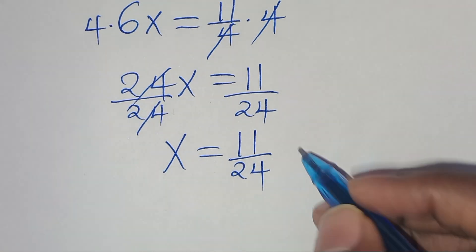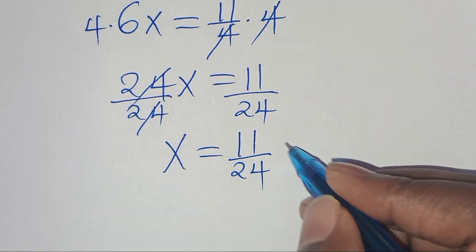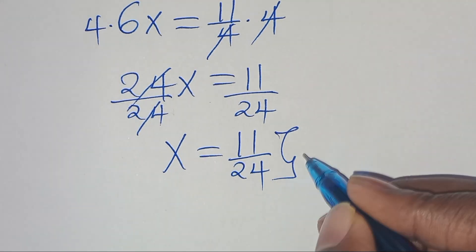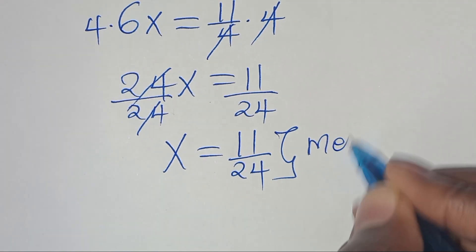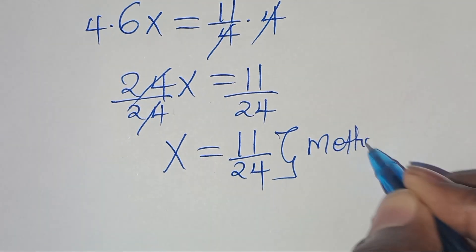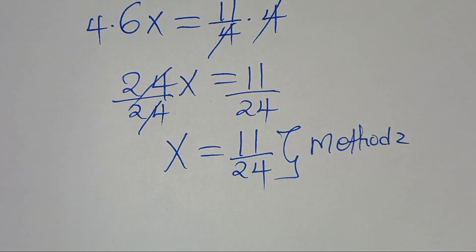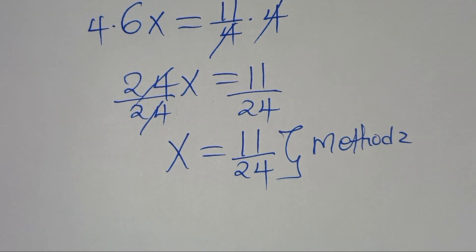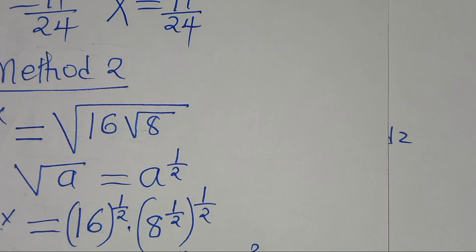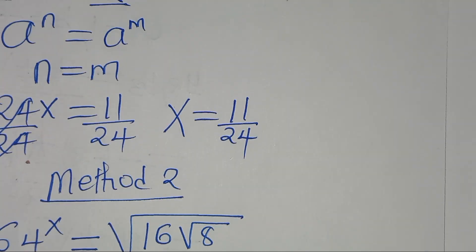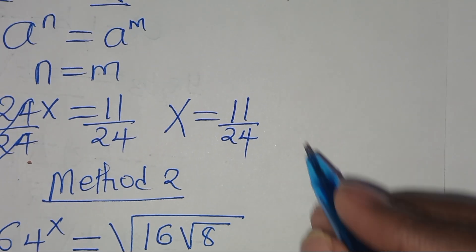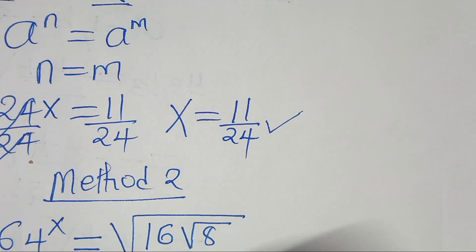So this is x by applying Method 2. Both Method 1 and Method 2 provide us with the same solution, which is x equals 11 over 24.